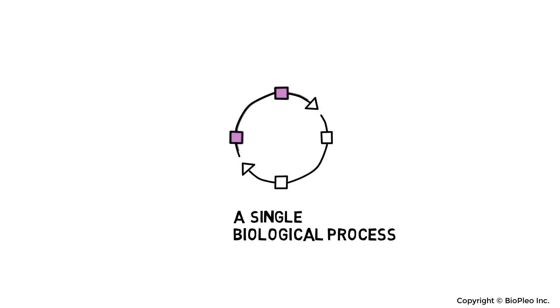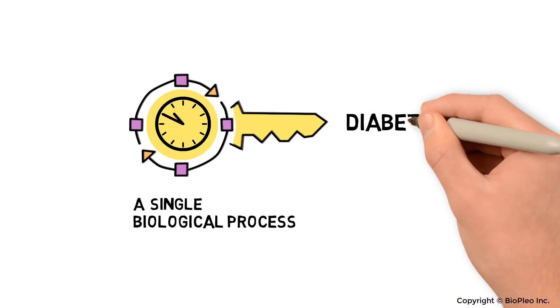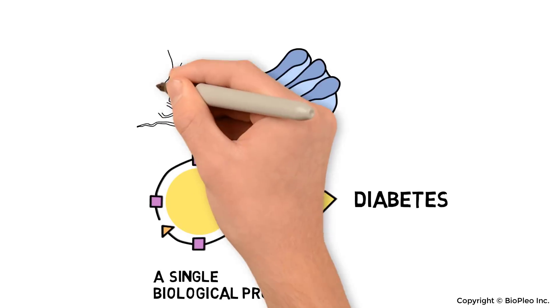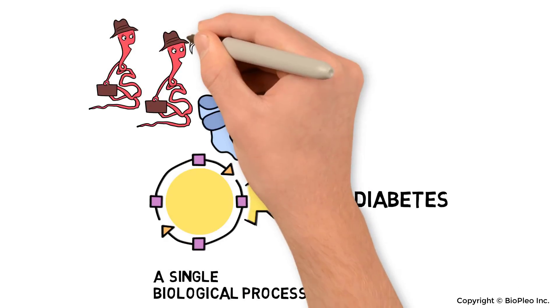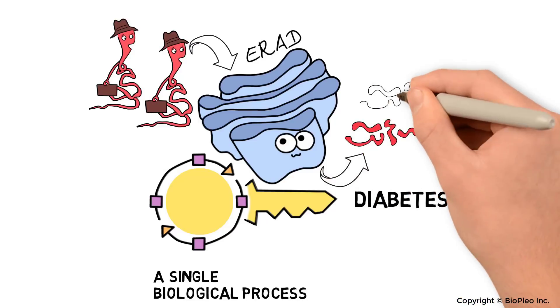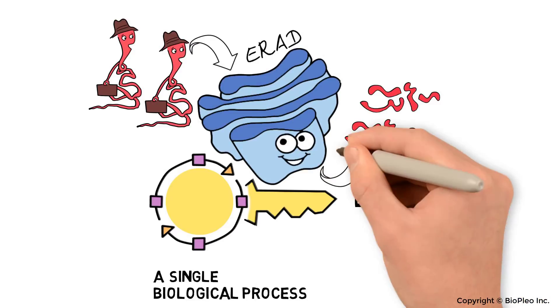Did you know that a single biological process may be the key to reversing diabetes? This process is called endoplasmic reticulum-associated degradation, or ERAD, and it helps cells deal with problematic proteins.